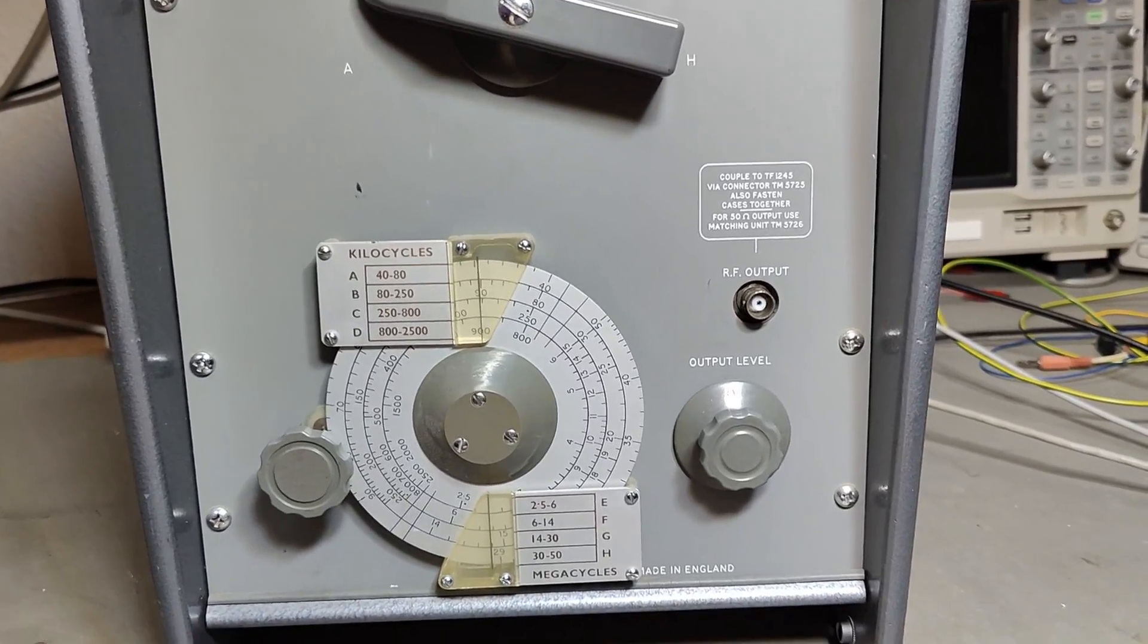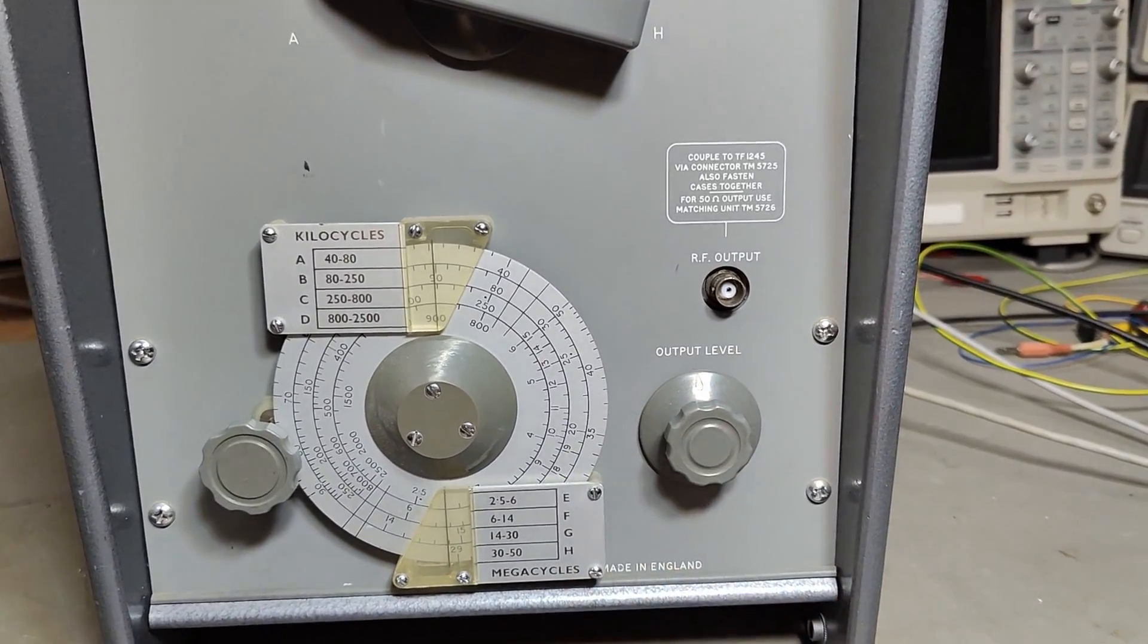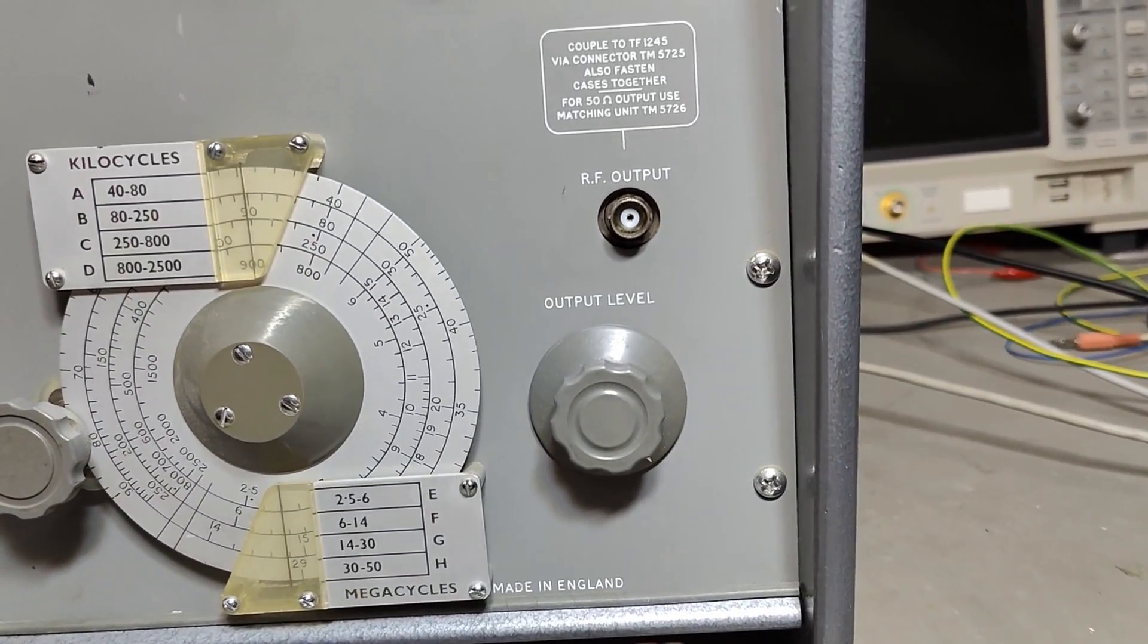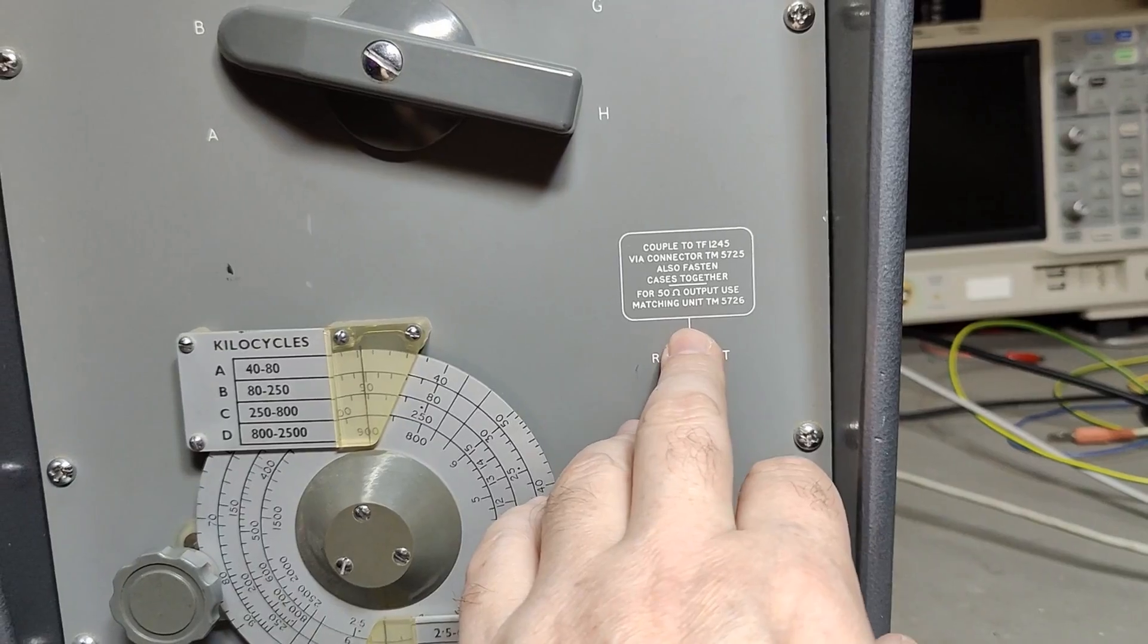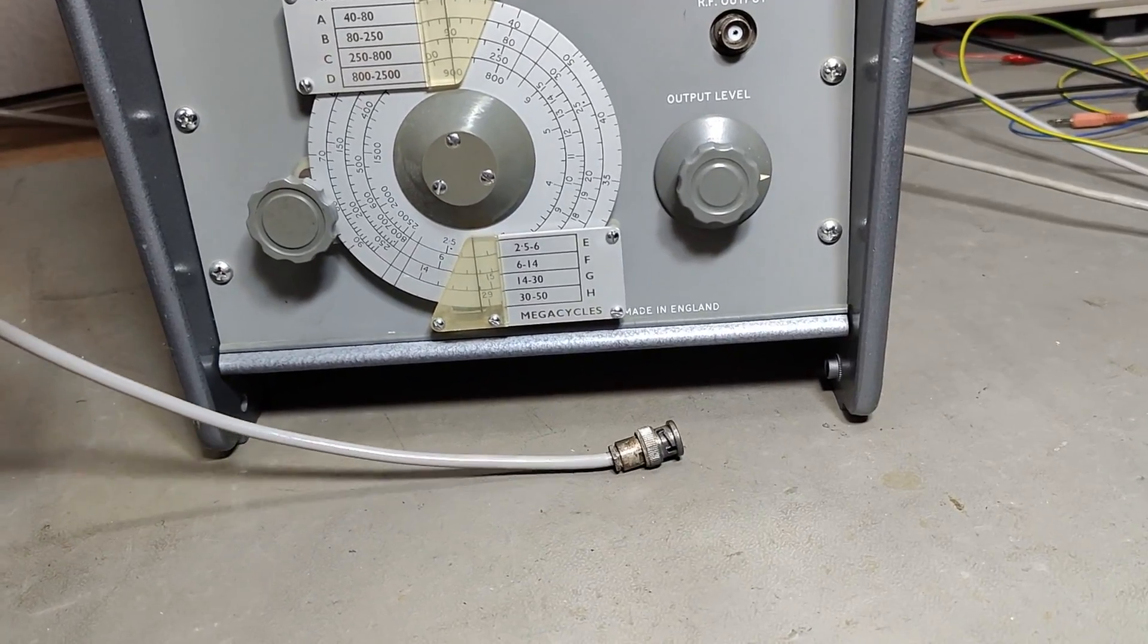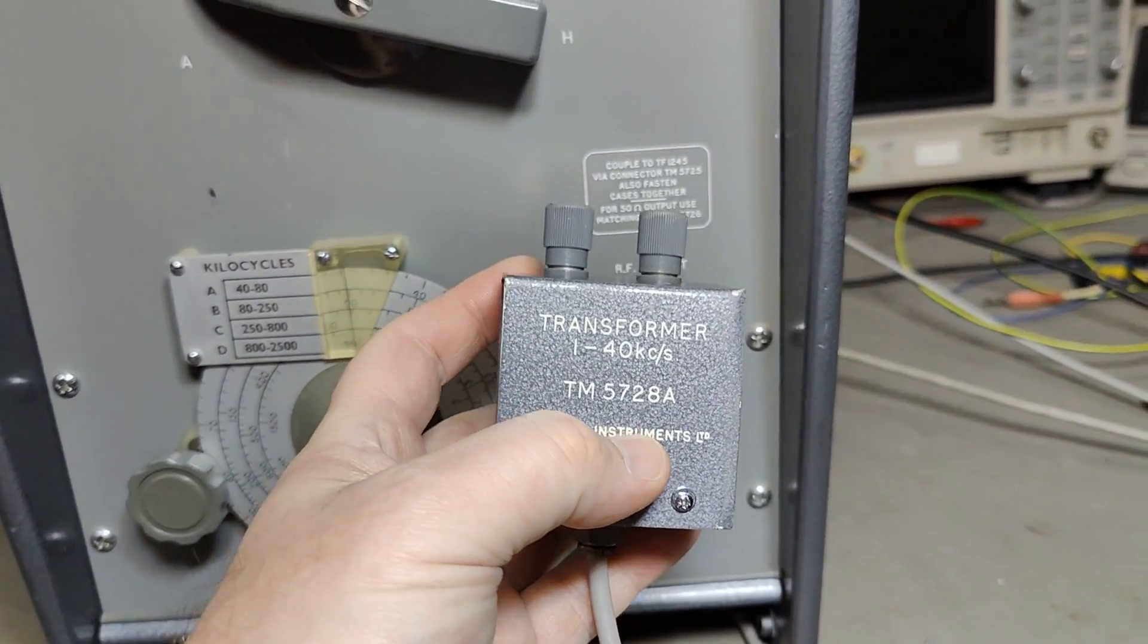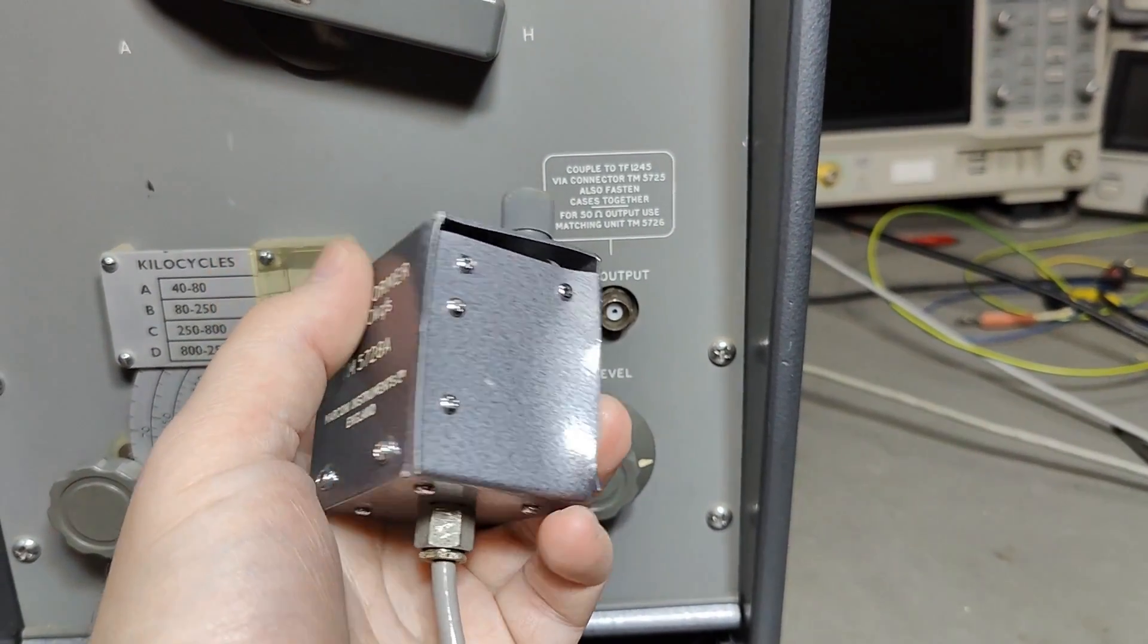And the output level, it should be from about 100 millivolts to 6 volt peak-to-peak. It's completely uncalibrated, so you don't know what you get. They don't even write anything around this potentiometer here. And then the RF output should be about 50 ohms. They say something about a coupler. I don't know if this is the right coupler.